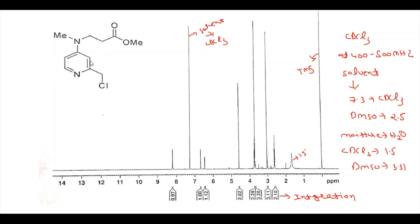First we will look for the aromatic protons — protons A, B, and C. There are three aromatic protons. Since proton C is connected to the nitrogen, its chemical shift value should be farther from the other two values. So this value corresponds to proton C, because it is connected to the more electronegative atom and its value should be more. These two protons are A and B.